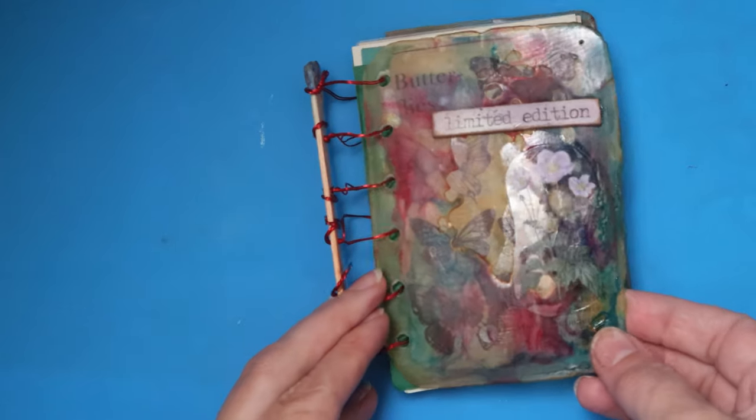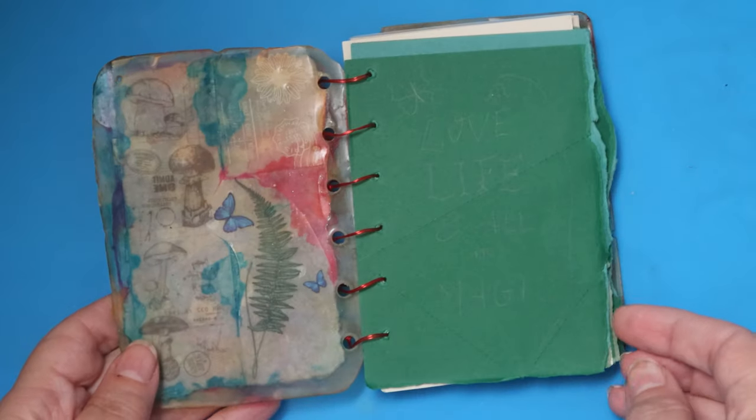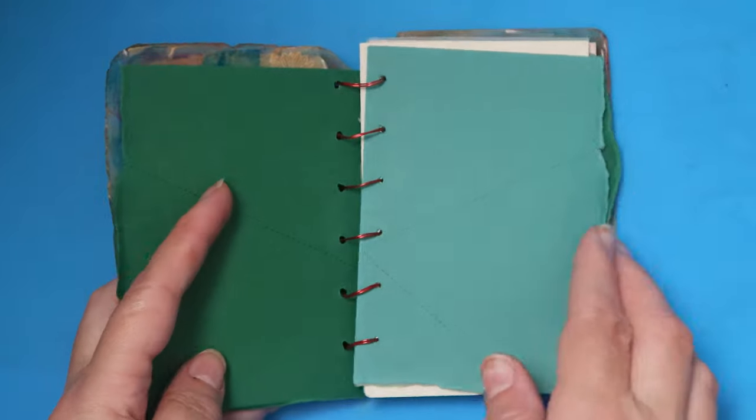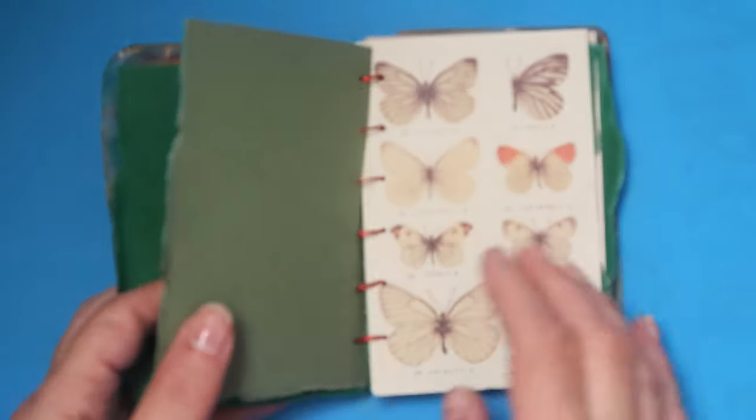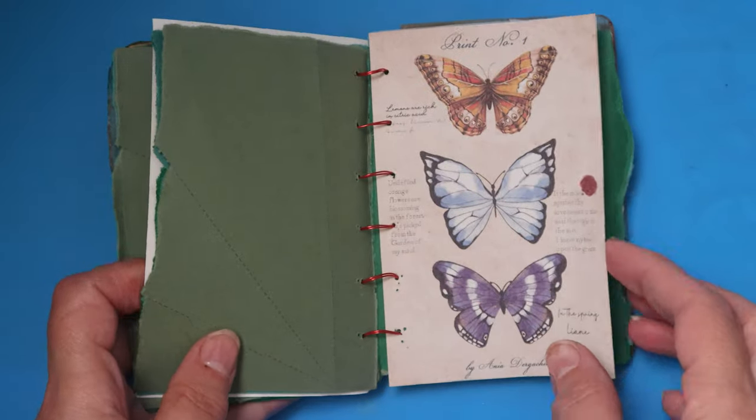And this is the finished little journal. It's a mini journal and the pages inside are made from some collage materials that I had and some paper left over from a previous project.